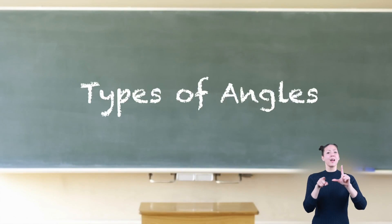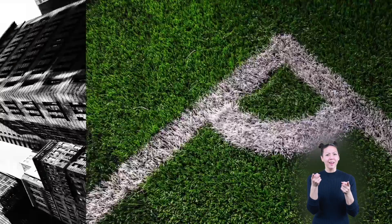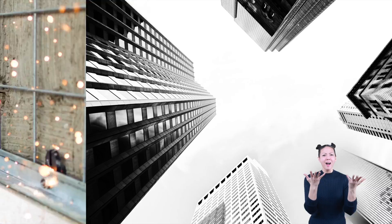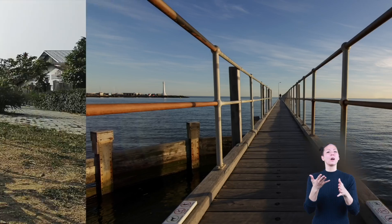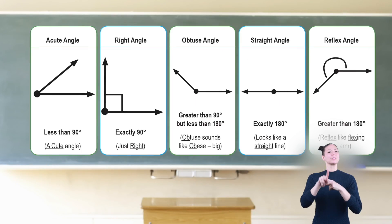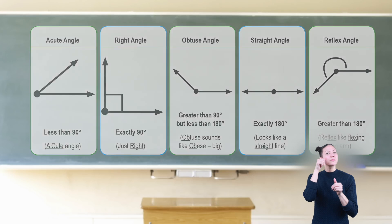Types of angles. Angles come in all sizes. Different sizes are identified based on degree measurement. There are five types of angles you must be able to identify. Here's how to remember them.